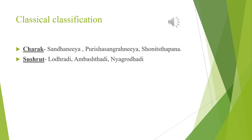Classical classification: According to Charak, it is in Sandhaniya Mahakashaya — the group of herbs used in healing of bone fractures or wounds — and Purish Sangreniya Mahakashaya, the group of herbs useful as antidiarrheal, and Shonitsthapan Mahakashaya. In Shushrut, this plant is included in Lodhradigana, Ambashthadigana and Nyagrodhadigana.